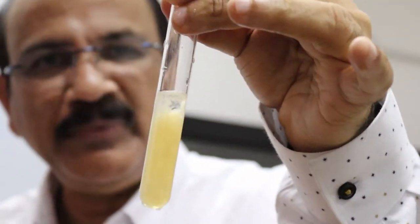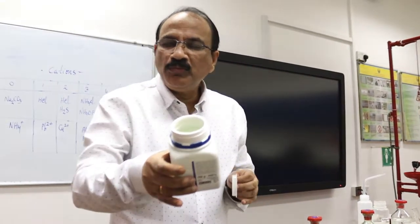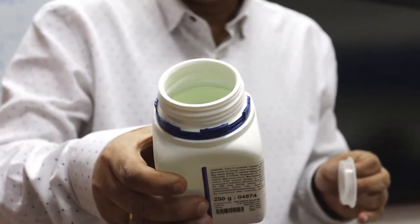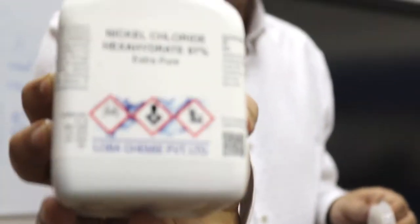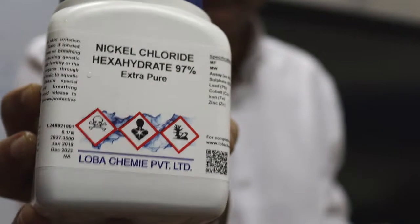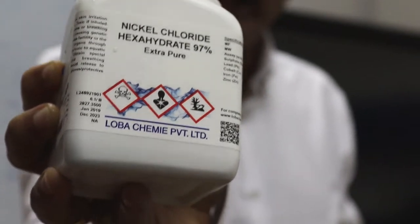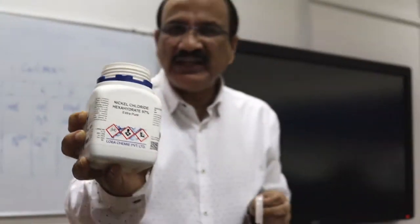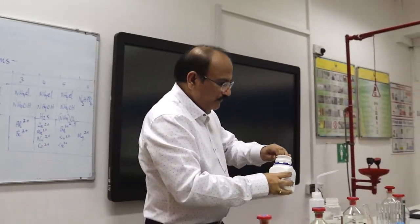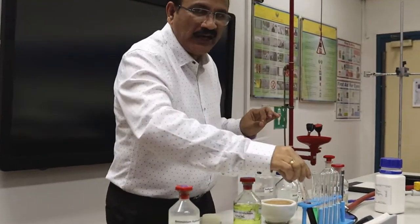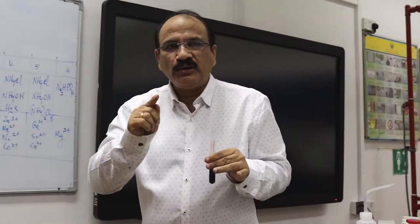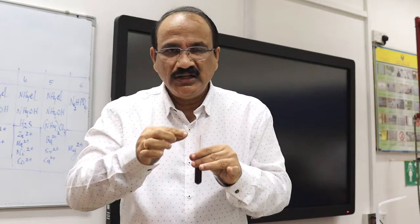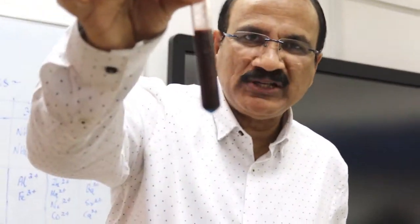This is the confirmatory test for Mn2+. We have one more cation in the fourth group — it is nickel, Ni2+. Using nickel chloride, we perform the group analysis by adding the group reagents: ammonium chloride, ammonium hydroxide, and hydrogen sulfide. We get a black precipitate, which indicates the presence of Ni2+.